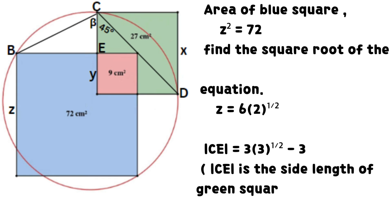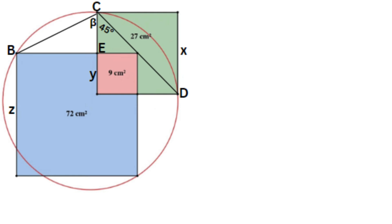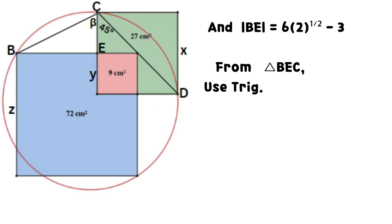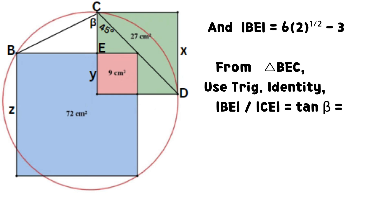Line CE = 3√3 − 3. CE is the side length of the green square not enclosed by y. And line BE = 6√2 − 3.